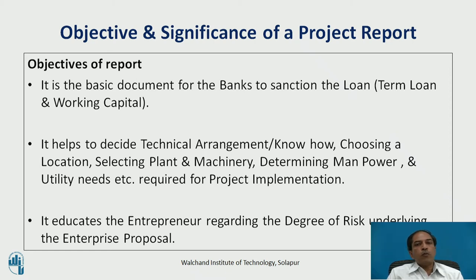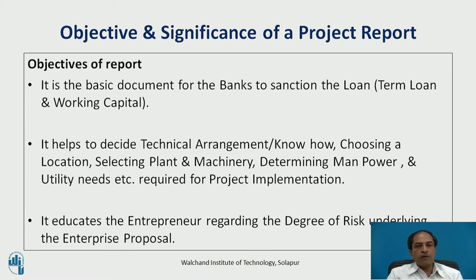It is the basic document for banks to sanction the loan — term loan and working capital. There are two types of loans: a term loan, which is used for asset creation — maybe land, building, machinery, equipment and accessories — and working capital, which is needed for day-to-day management: purchasing raw material, processing, and finally selling to customers. Whatever capital is blocked in the conversion from raw material to final sales, that entire capital is called working capital. This is the first and foremost document which banks ask for.